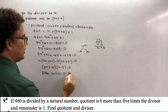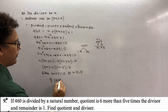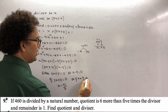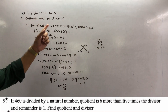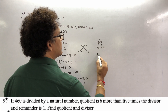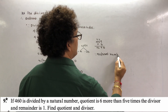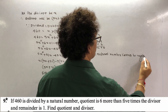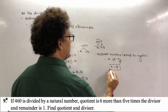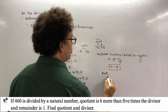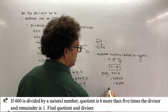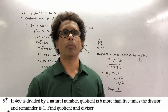Either 5x + 51 = 0, giving x = -51/5, or x - 9 = 0, giving x = 9. Since 460 is divided by a natural number, the divisor cannot be negative. Therefore x is not equal to -51/5, and x = 9. The quotient is 5x + 6 = 5(9) + 6 = 45 + 6 = 51. So the divisor is 9 and the quotient is 51.